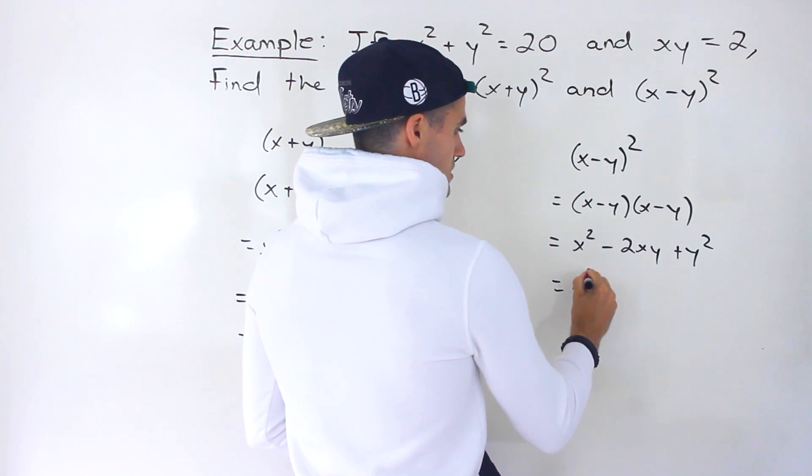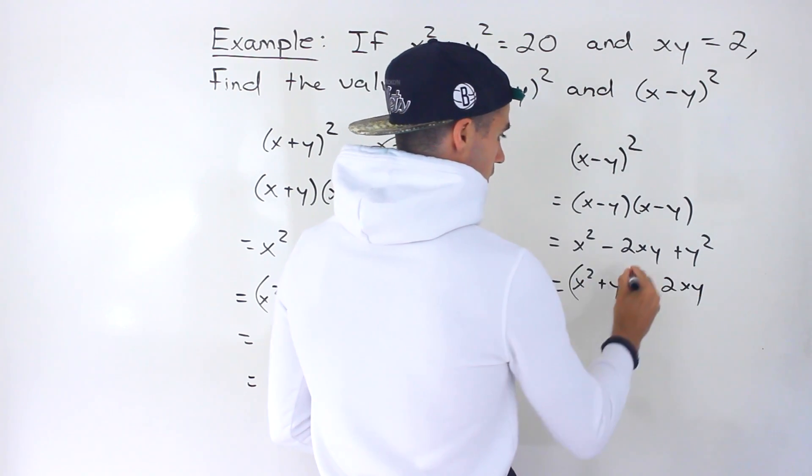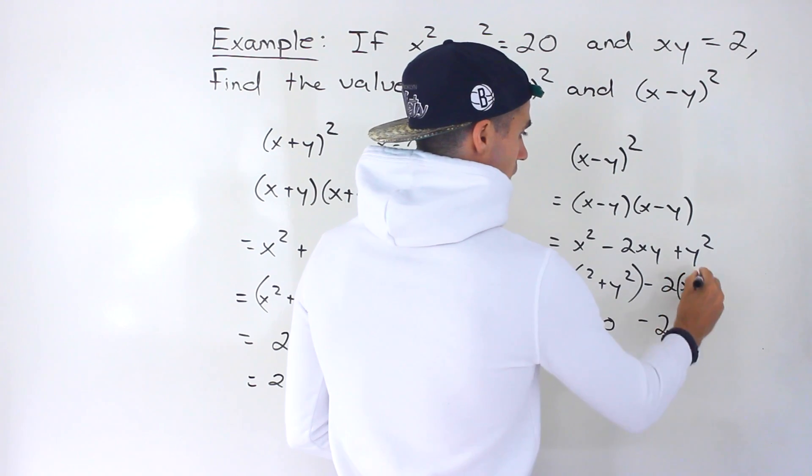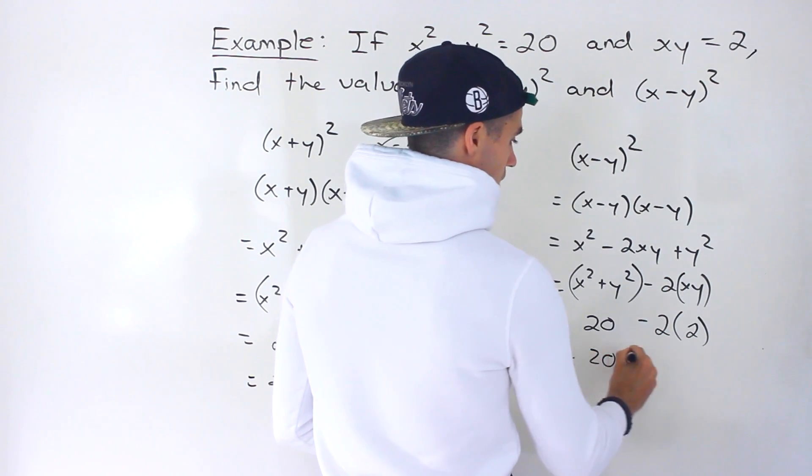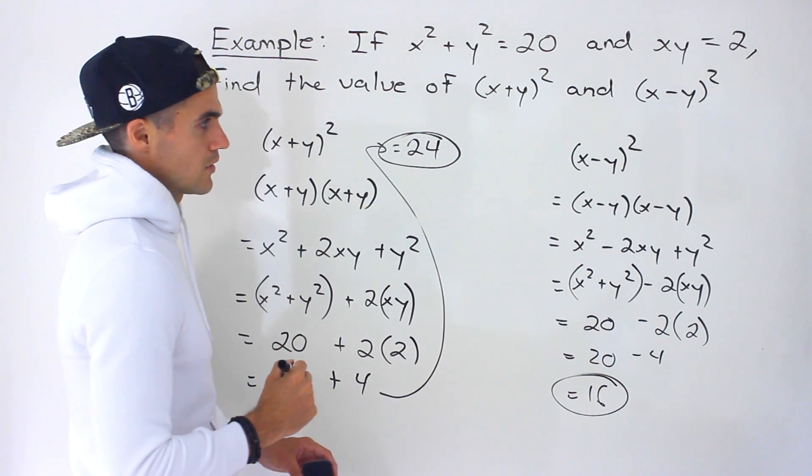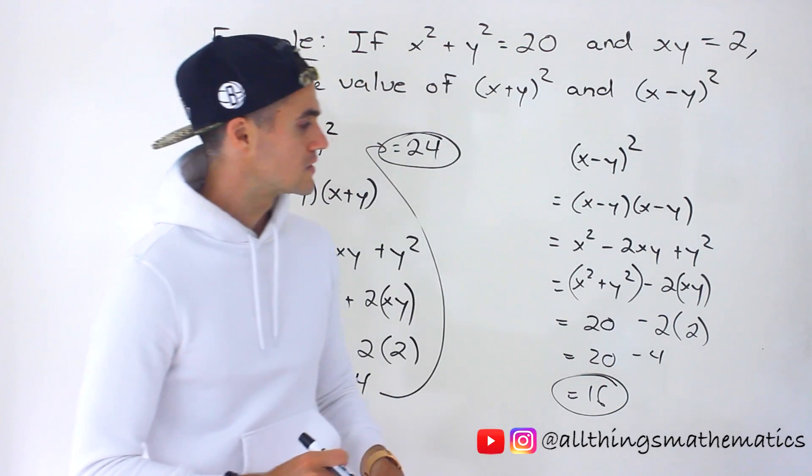We can rearrange this as x² + y² - 2xy. We know that's equal to 20. Then we've got 2 times xy, which is 2 times 2. So we'd have 20 - 4, which gives us 16. We end up getting a value of 16 for (x-y)².